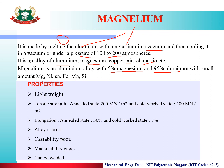Properties of Magnelium: it is lightweight. Its tensile strength is 200 MPa in the annealed state and 280 MPa in the cold-worked state. It has 30% elongation and 7% cold work. It is slightly brittle with poor castability, but has good machinability and can be welded.